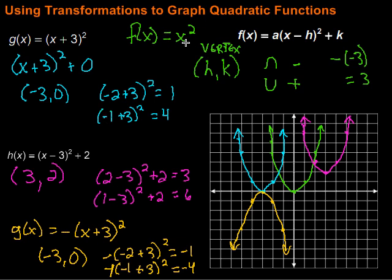To summarize: when using transformations to graph quadratic functions, the parent function is x squared. From vertex form, the vertex (h, k) falls right out, telling you where to start. Pick nearby points, use the symmetry of parabolas to find one or two more, then sketch. Remember: if 'a' is negative the parabola opens downward; if positive, it opens upward.